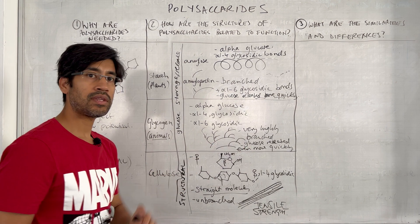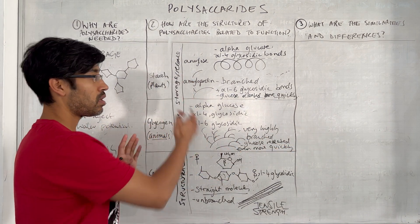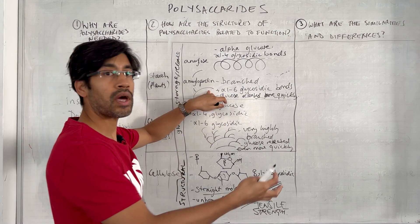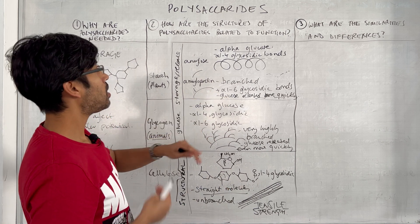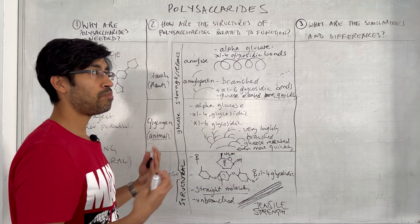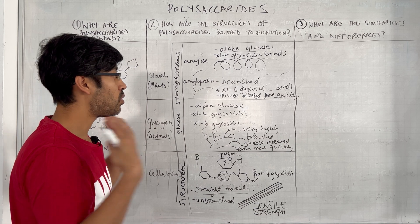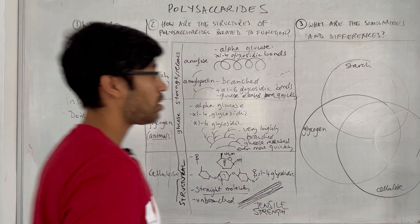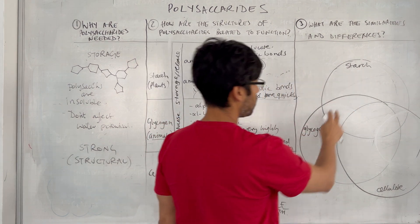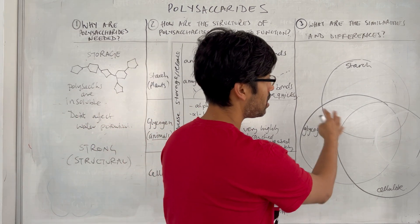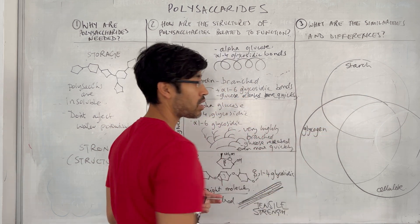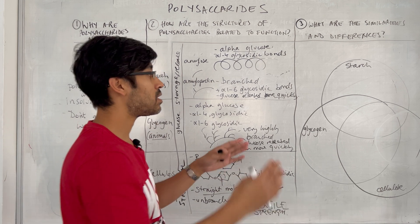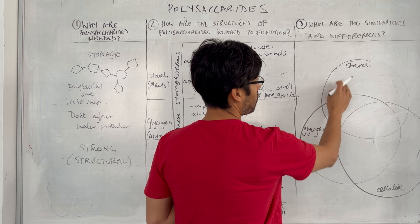That covers structure related to function. Remember, if anything isn't making sense you should go away and do that research. Now for the third question: what are the similarities and differences? Here we have a Venn diagram with starch, glycogen, and cellulose. We could be asked to compare starch to glycogen, glycogen to cellulose, starch to cellulose, or even amylose to amylopectin. In the overlapping sections we put shared concepts; in the outer sections we put unique features.